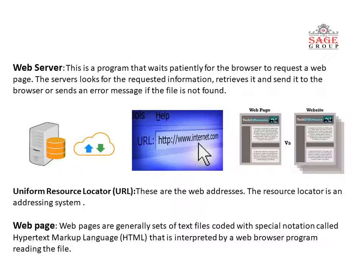We have addresses for web pages — this is the URL, which stands for Uniform Resource Locator. URL is an addressing system that helps servers and browsers locate resources. Web pages are generally sets of text files coded with special notation called HTML, which is interpreted by a web browser program reading the file. A website is a collection of web pages.